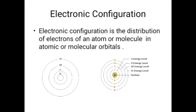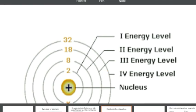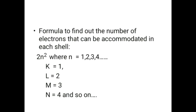So this is the electronic configuration. The formula to find out the number of electrons that can be accommodated in each shell is equal to 2n².